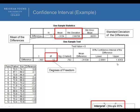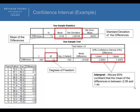How we interpret this is we say that we are 95% confident that the mean of the differences is between negative 2.06 and 1.44. So the question is, can we detect a difference? Can we tell if there is a difference between father's heights and son's heights based on our sample of 13?